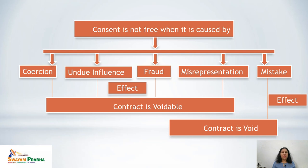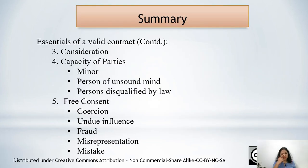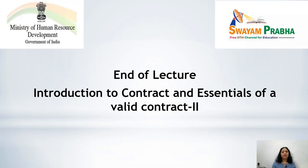To summarize, in this lecture we have discussed three essentials of a valid contract: consideration, capacity of parties — under which we discussed minors, persons of unsound mind, and persons disqualified by law — and free consent, under which we discussed five components: coercion, undue influence, fraud, misrepresentation, and mistake. Combined with offer, acceptance, and legal relationship covered in the previous lecture, this completes the essentials of a valid contract. This is the end of this lecture. Thank you.